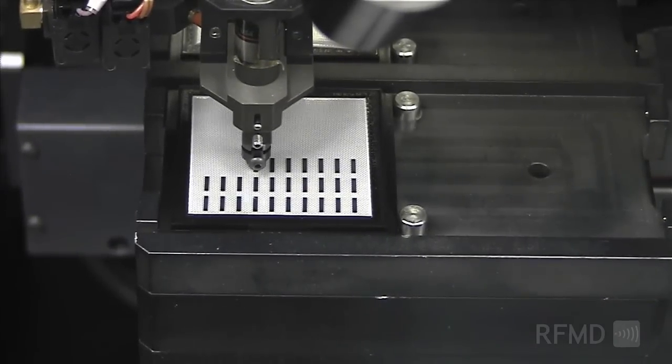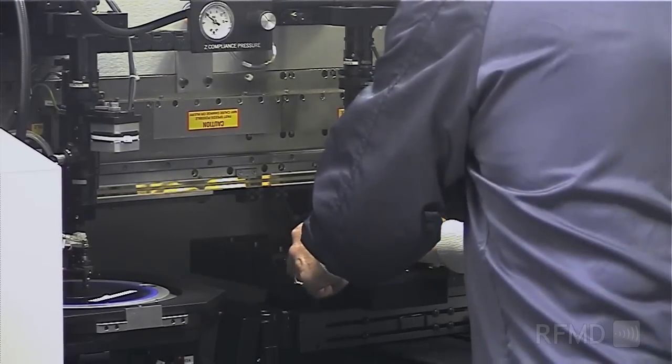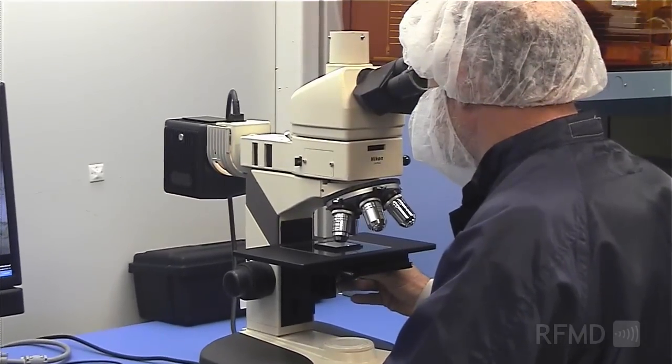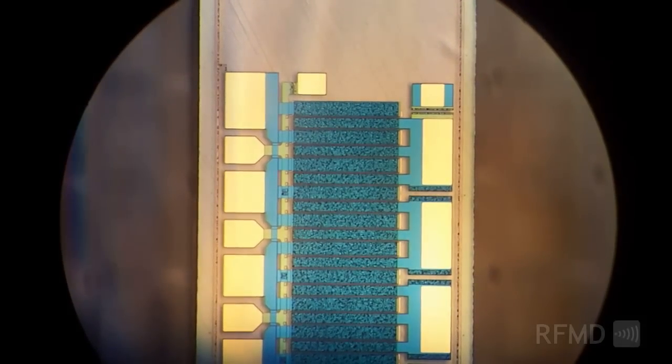In addition to the regular testing and inspection procedures performed during the production process, RFMD offers additional die-level testing services which include higher-level screening and optional visual inspection of die to both commercial and military standards.